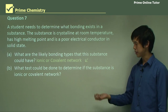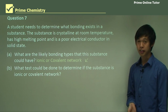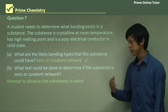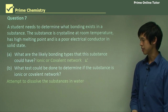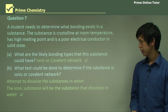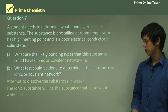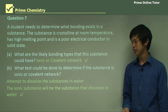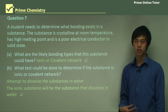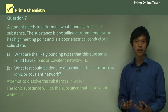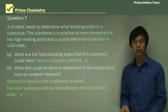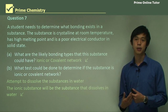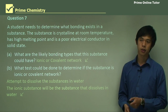What test could be done to determine if the substance is ionic or covalent network? You could attempt to dissolve the substance in water. The ionic substance will be the one that dissolves in water. If it does dissolve, you know it's ionic — covalent network substances will likely not dissolve in water at all.